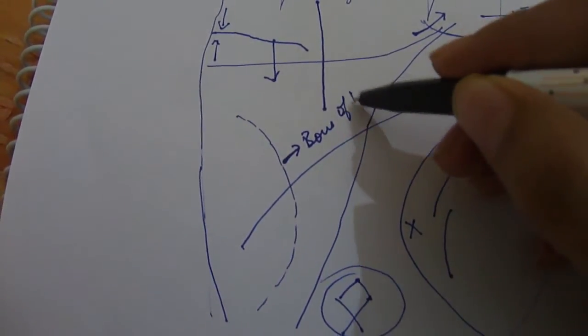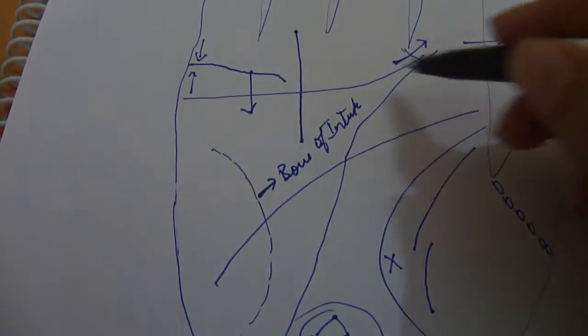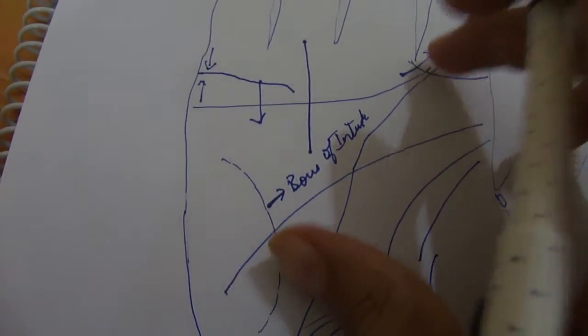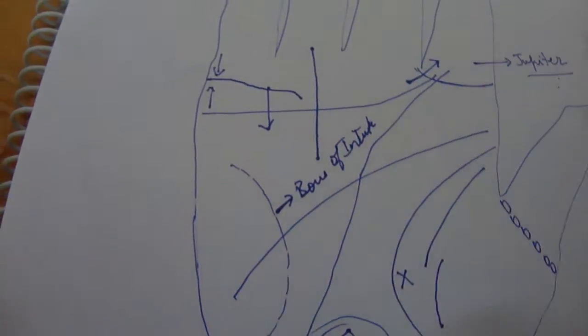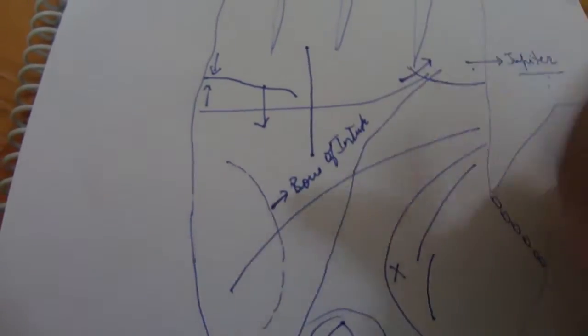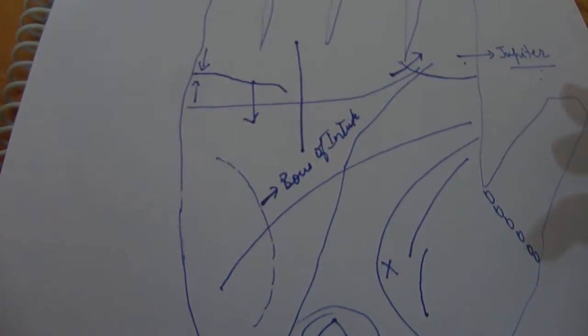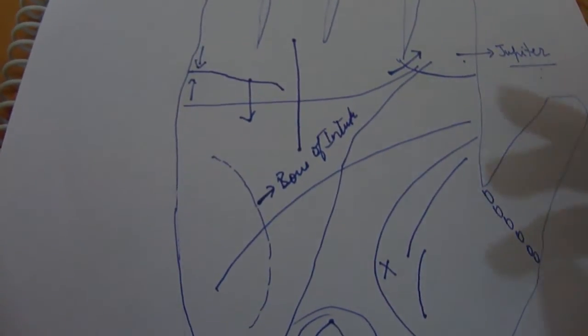This was not a surprise because bow of intuition indicates towards intuition and so does ring of Solomon. They both kind of complement each other. This can also mean that the person has a Jupiter moon strong because this is the mount of moon, and Jupiter moon strong means Jupiter moon conjunction might be a possibility or maybe both Jupiter and moon are doing well.